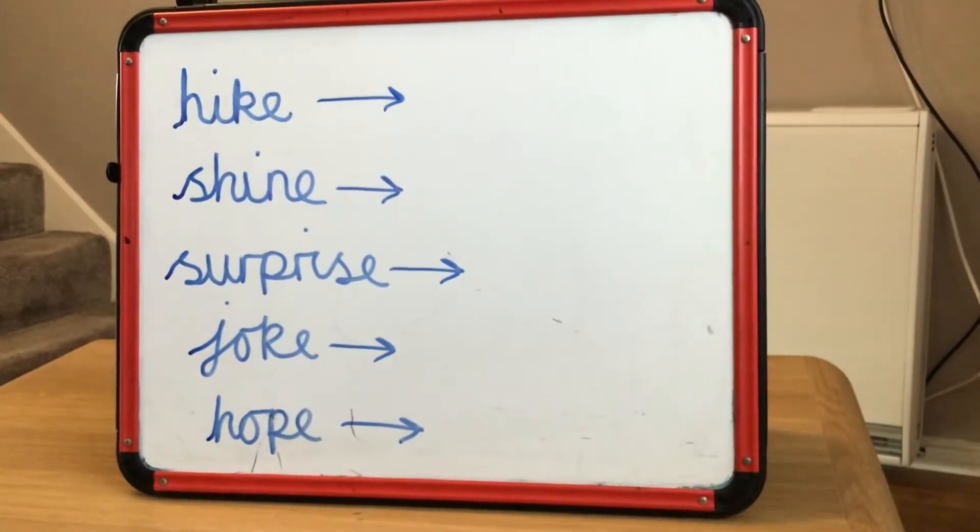Hello you two. This week our spelling rule is adding the suffix '-ing' to words that end with an e.